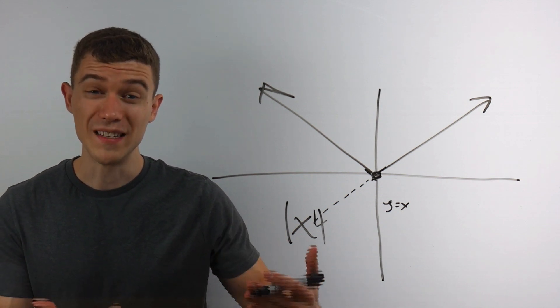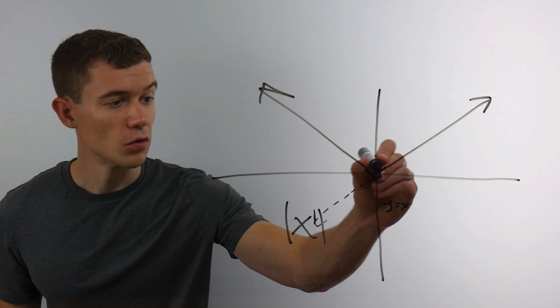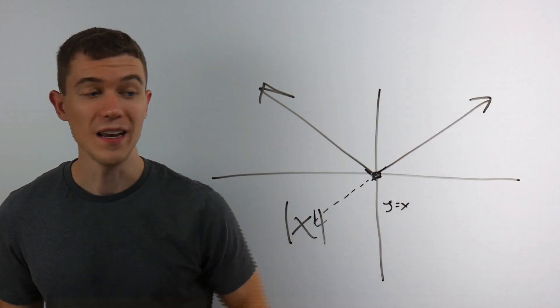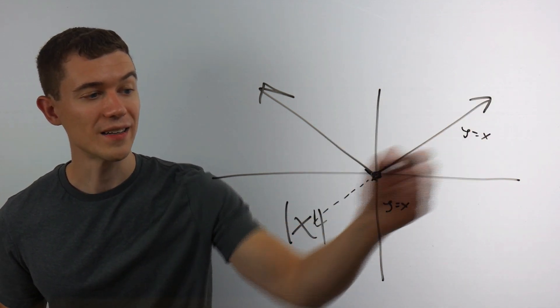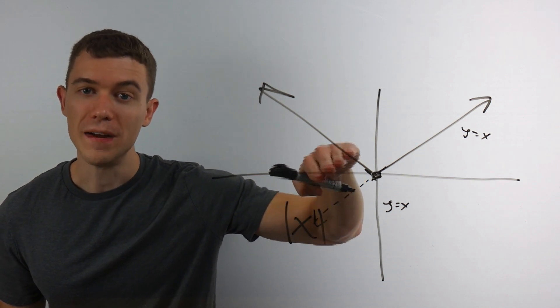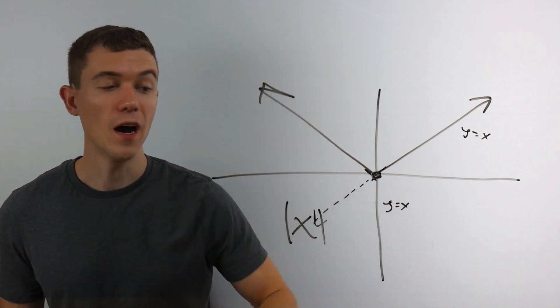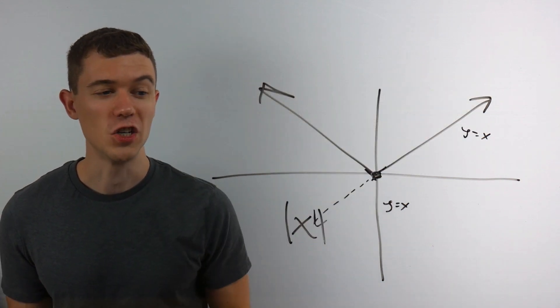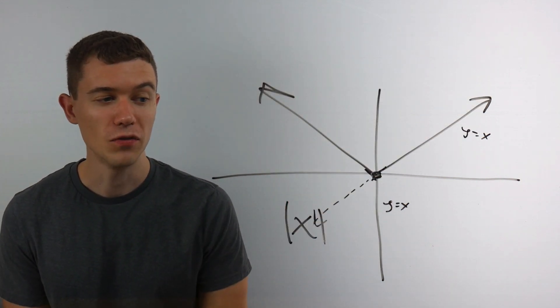If you think about what the absolute value of that would be, the absolute value just makes negative things positive. So this side of the line is just the same. It's just the piece y equals x. But the part that would be negative would be made positive. It would be reflected up. That's why we're getting this v shape. That's the graph of the absolute value of x.